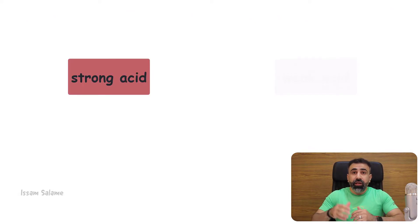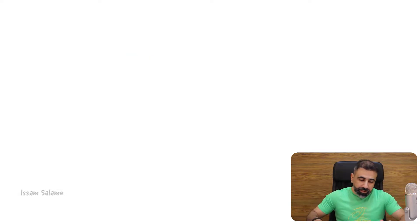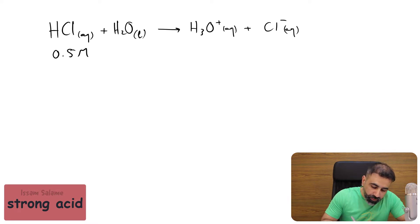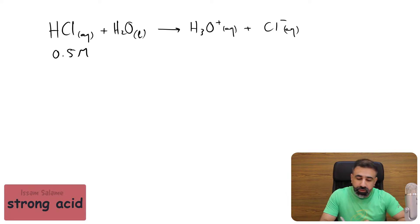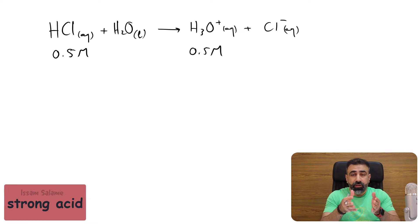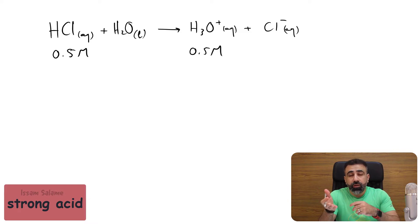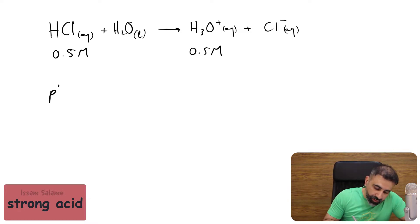Strong acids like HCl dissociate completely. So if we have 0.5 molar of HCl, we are going to get 0.5 molar of hydronium ions, because strong acids dissociate completely. The concentration of hydronium ions is equal to the concentration of HCl. In this case, it's easy to find the pH by using the formula: pH is equal to minus log concentration H3O+.